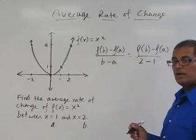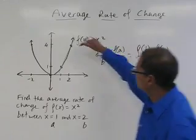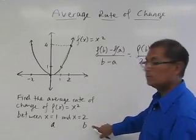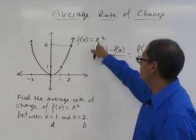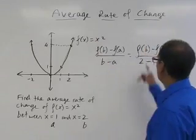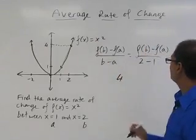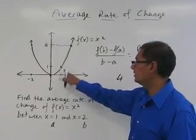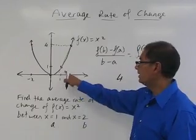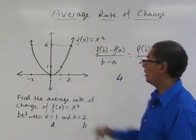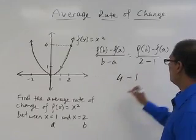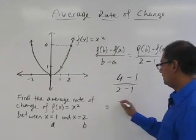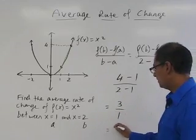But what is f of b and f of a? Well, f of b is the function value of b, which we can see from the graph. If we plug in 2, b equals 2 into the function squared, 2 squared is 4. So f of b is 4. And f of a is the function value of x equals 1. 1 squared is 1. So I have 4 minus 1 over 2 minus 1. And that gives me 3 over 1, which gives me 3.